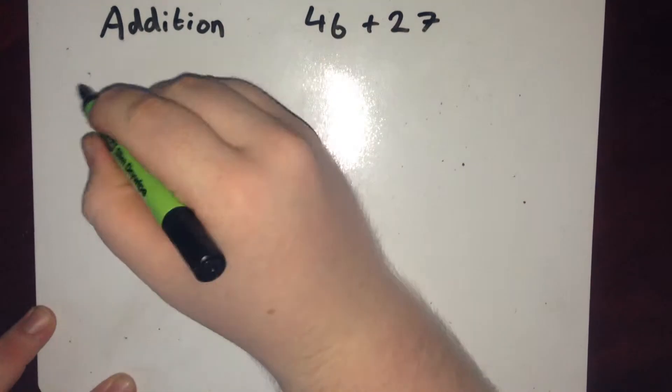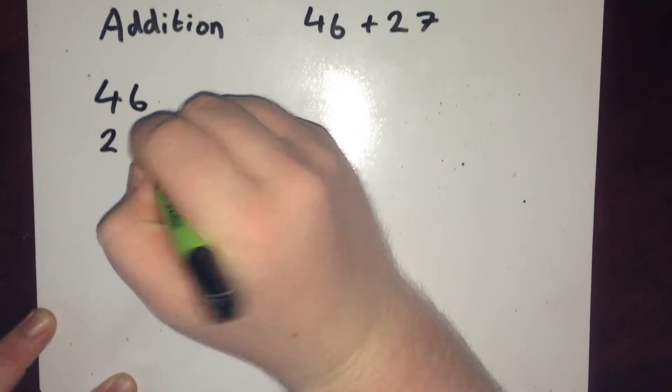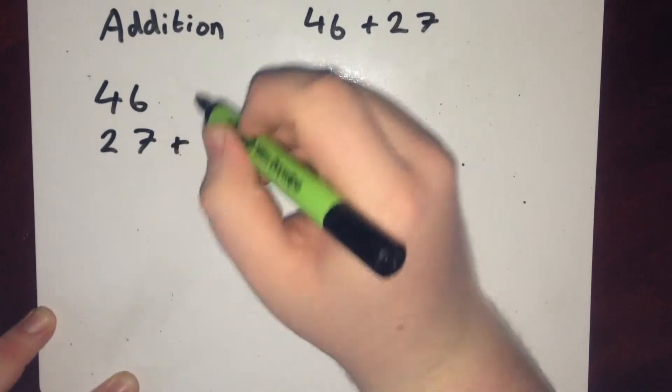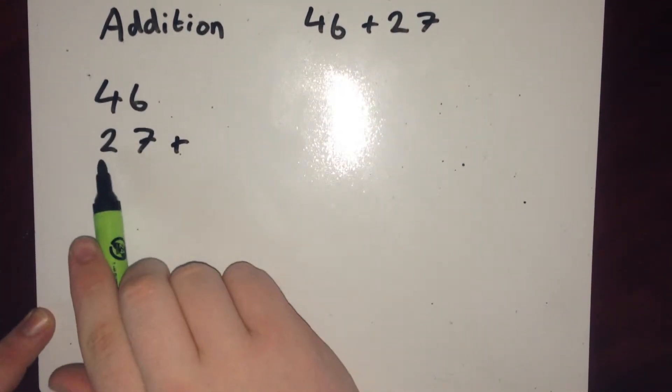Method 1 is called the column method. This involves writing the two numbers, one on top of each other, making sure you line up the units and you line up the tens.